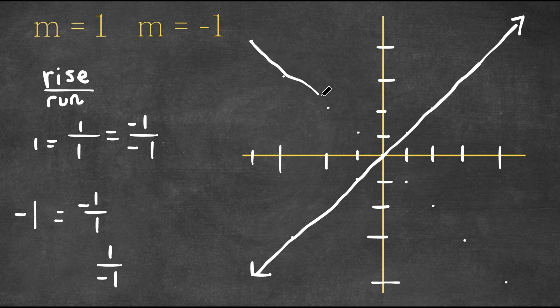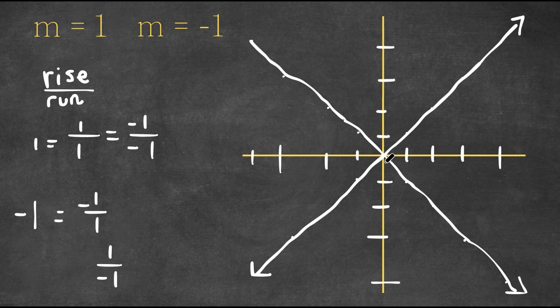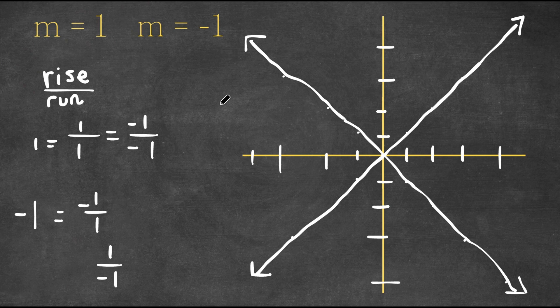And now as you see, if we connect these points, our line would look something like this. And notice how one and negative one, they're complete opposites. They intersect and they go opposite ways. So that's how you graph a positive versus a negative slope.